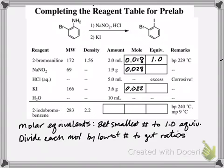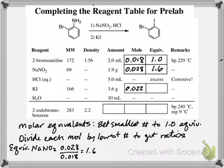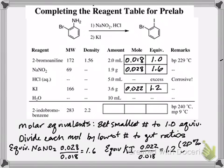And so to calculate the equivalents of NaNO2, we're going to divide 0.028 by 0.018, and we'll get 1.6. And then the molar ratio, the equivalents of KI, potassium iodide, is going to be 0.022 divided by 0.018, and we get 1.2 equivalents. So in other words, we could see now that both the NaNO2 and KI reagents are going to be in excess.